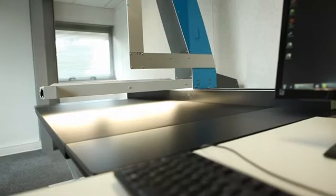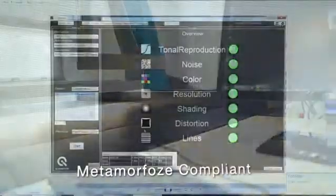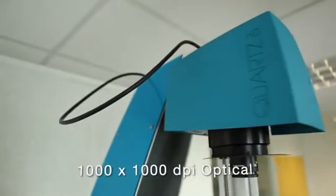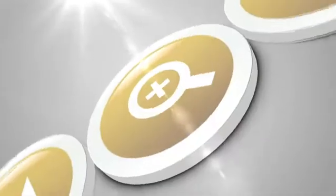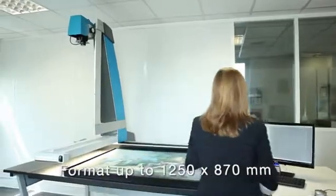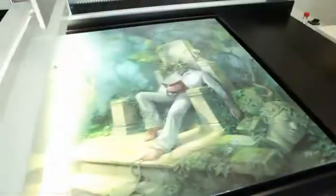The new SupraScan Cortz A0HD is metamorphose compliant and can digitize up to 1000 by 1000 DPI optical. Cortz can digitize documents in formats up to 1250 by 870 millimeters.